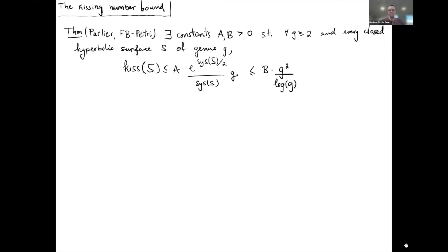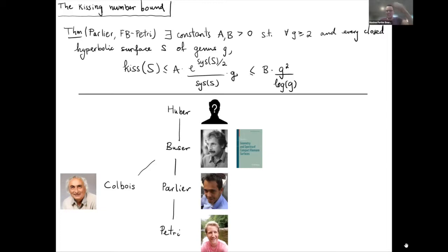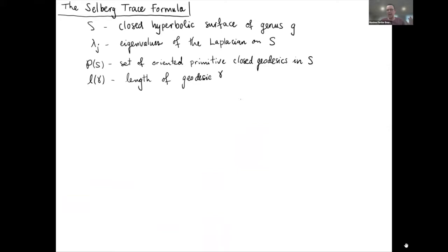An interesting tidbit of mathematical genealogy: Huber was the thesis advisor of Peter Buser, known for his book on the geometry and spectrum of compact Riemann surfaces. Buser was the thesis advisor of Hugo Parlier, who was the advisor of my collaborator Bram Petri. Buser was also the thesis advisor of Bruno Colbois, who I mentioned on the first slide and who is giving a talk in this seminar in a couple of months.